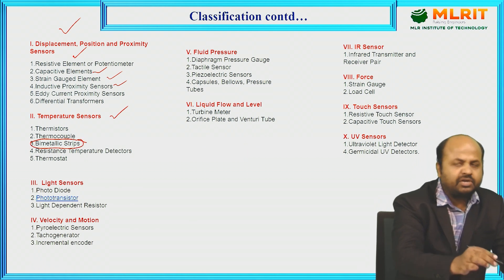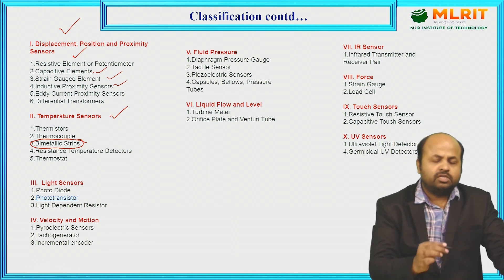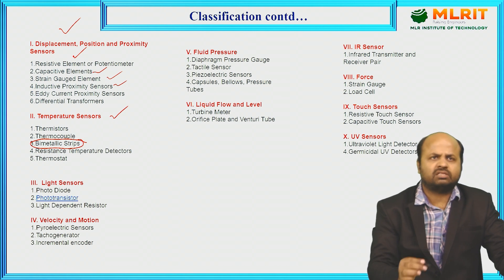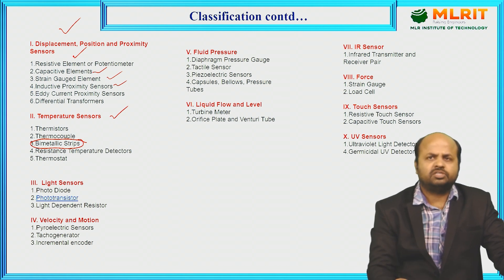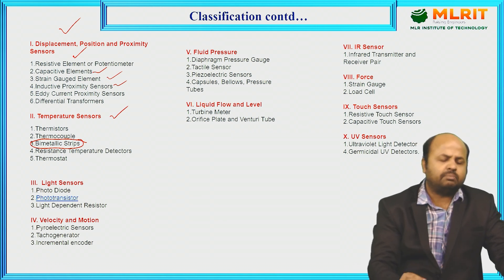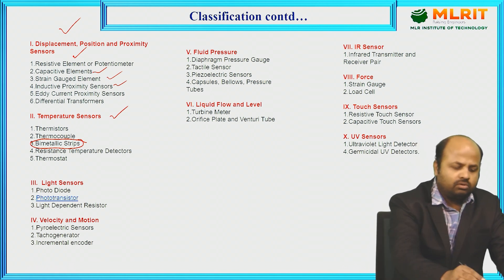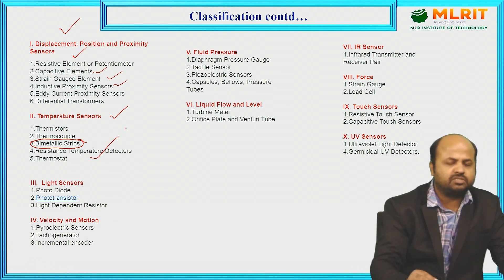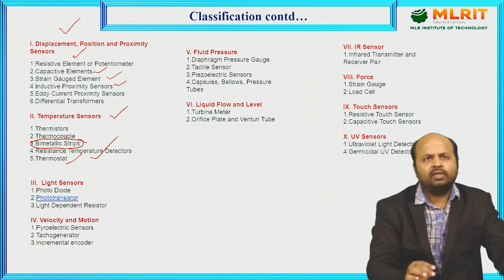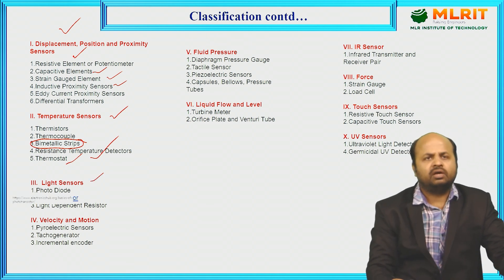The bimetallic strip was used in earlier tube lights. It is a thin metal strip that, when temperature is sensed, shows elongation or deformation in shape. For measuring temperature, we can also use resistor temperature detectors and thermostats. For measuring light, we can use photodiode, phototransistor, or LDR.